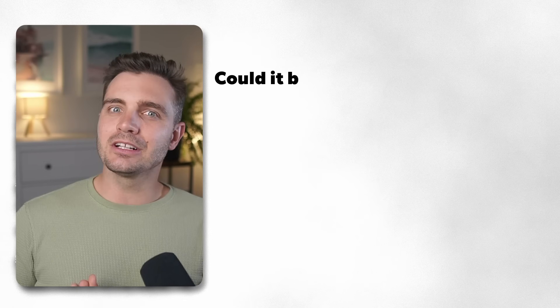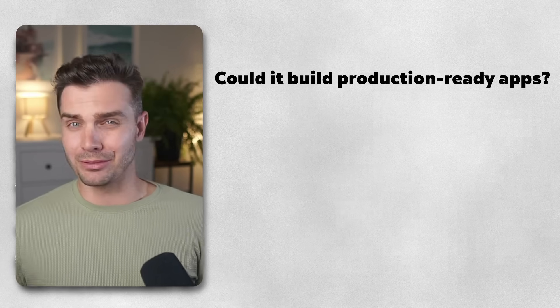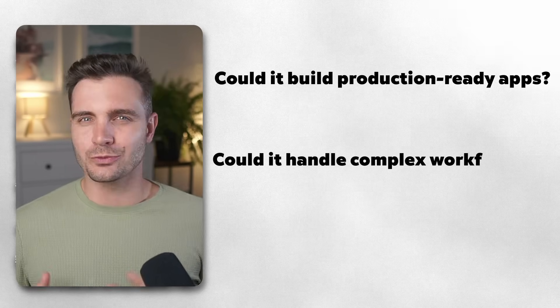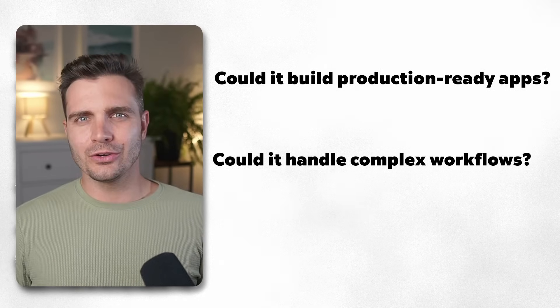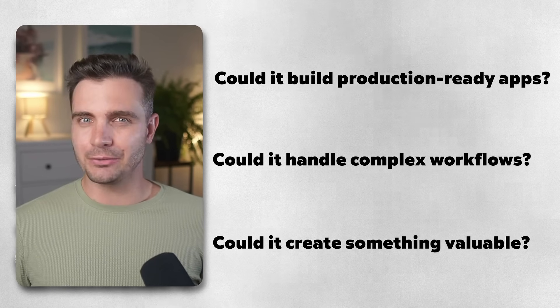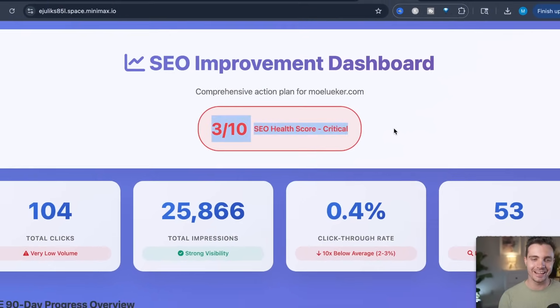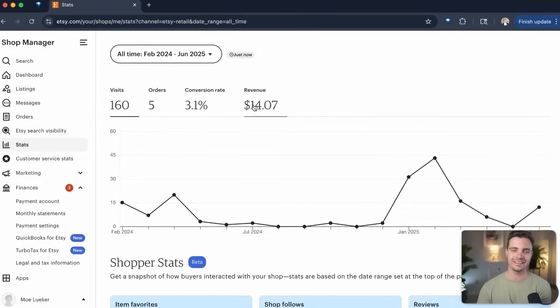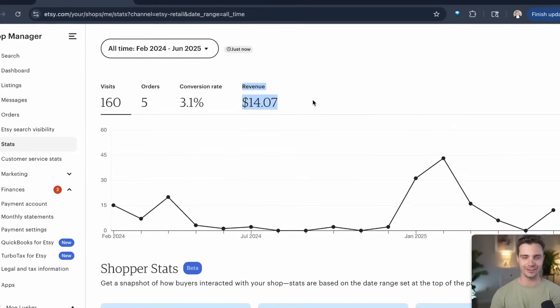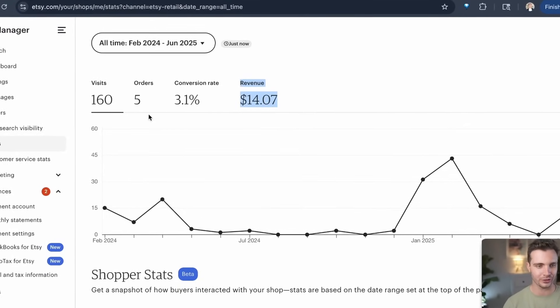Today's experiment started simple. I wanted to test if Minimax Agent could really live up to the hype. Could it build production-ready applications from a simple prompt? Could it handle complex workflows? And most importantly, could it create something valuable enough that people would actually pay for it? I already created an SEO analyzer that saved me hundreds of dollars and even sold my digital coloring book on Etsy that I created with this exact method. So I'd say the test was definitely successful. Let me show you everything I built and exactly how you can replicate it.